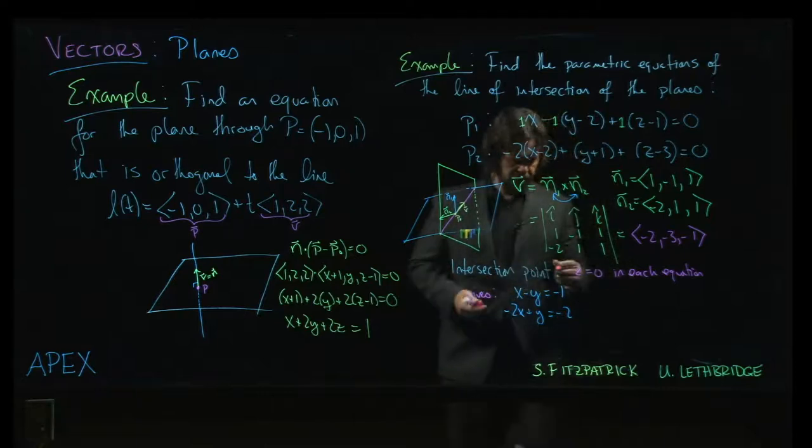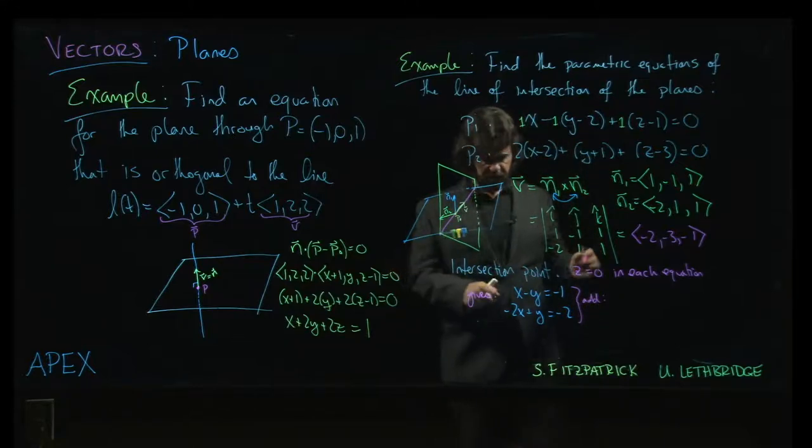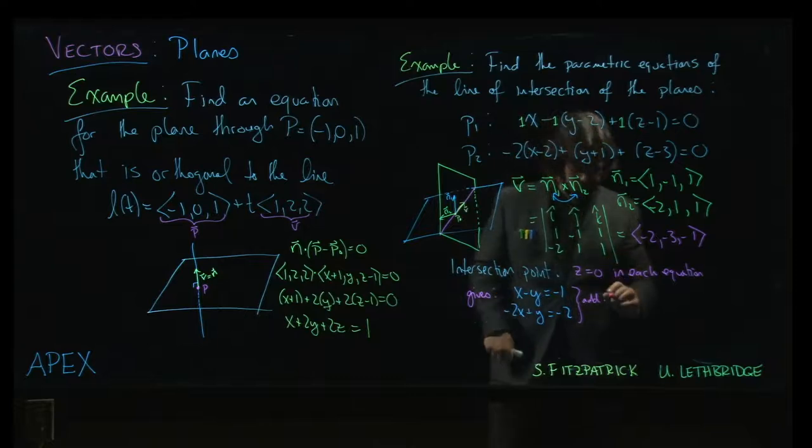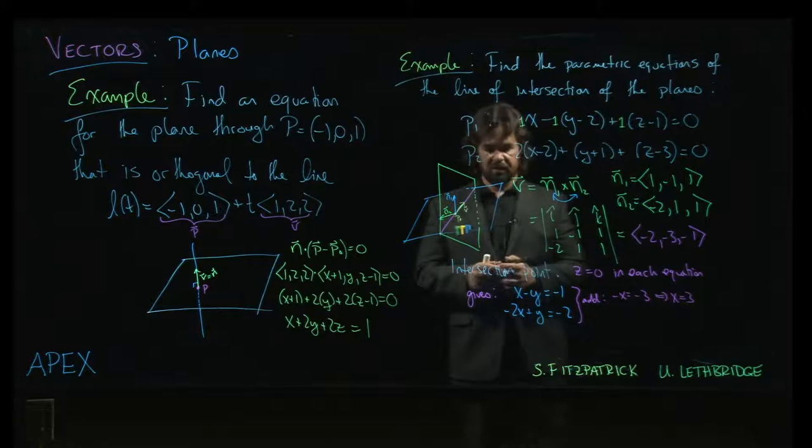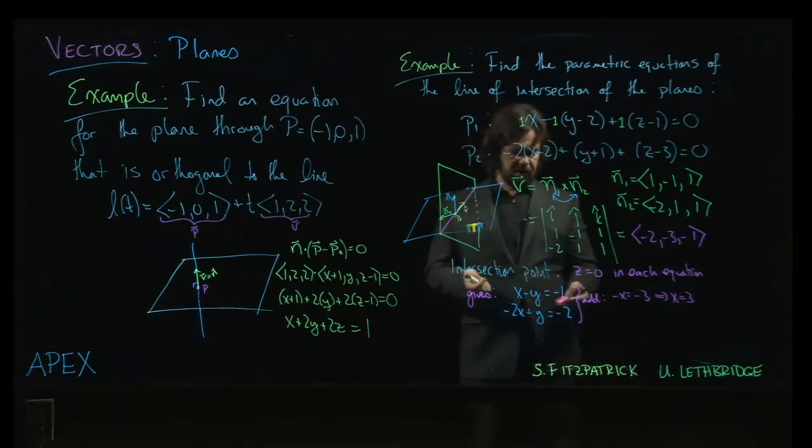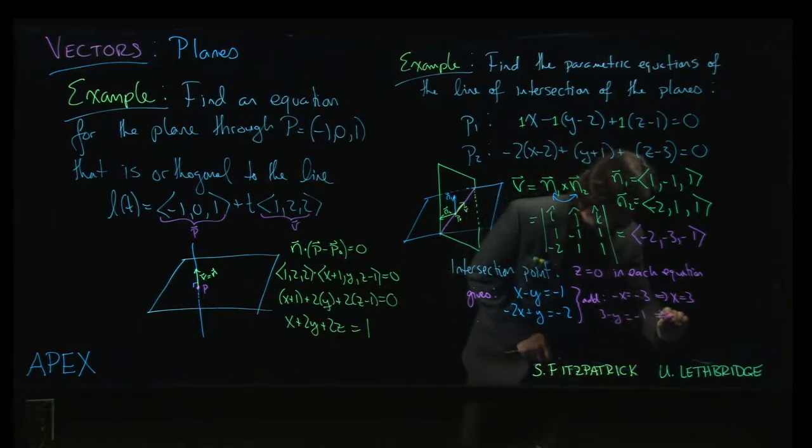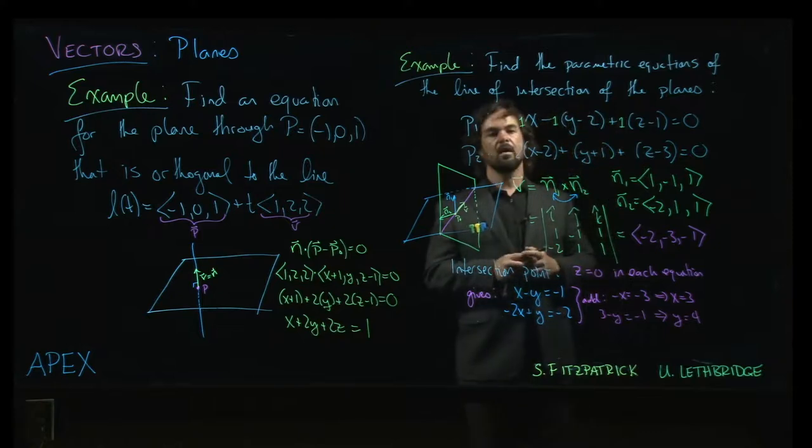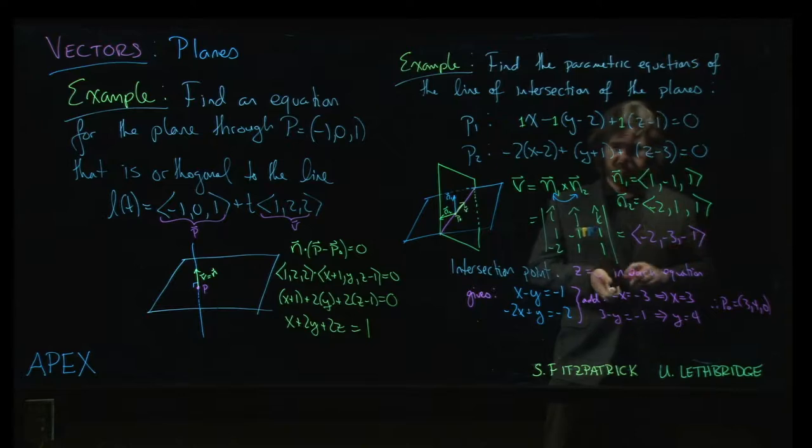So if I add the two equations, minus Y plus Y, the Ys cancel out, which is why I'm doing this. X minus 2X, I get minus X equals minus 3. So X equals 3. And then I can plug that back into either of the equations to get the value for Y. So if I put X into here, 3 minus Y equals minus 1 tells me that Y is equal to 4. That gives me a point 3, 4, and I set Z equal to 0.